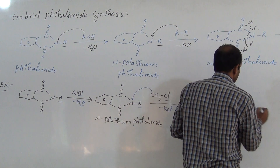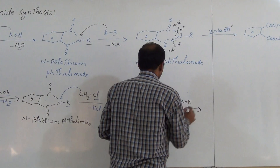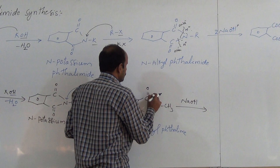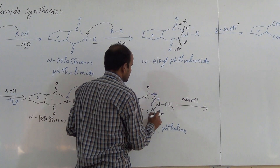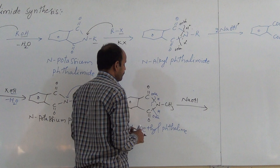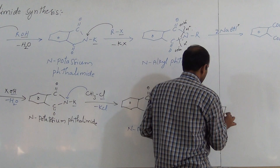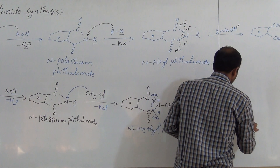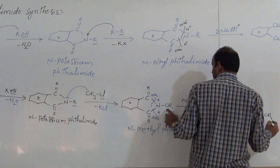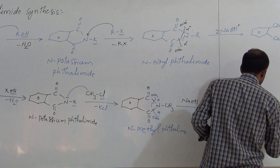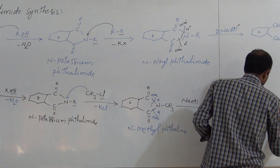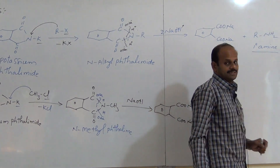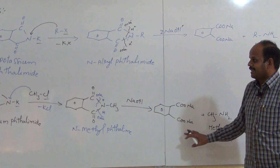N-methyl phthalimide is reacted with sodium hydroxide; the bond breaks, giving H and ONa groups. After breaking, we get the primary amine — that is CH3NH2 — which is methanamine. This is the primary amine, so this reaction is called Gabriel Phthalimide synthesis.